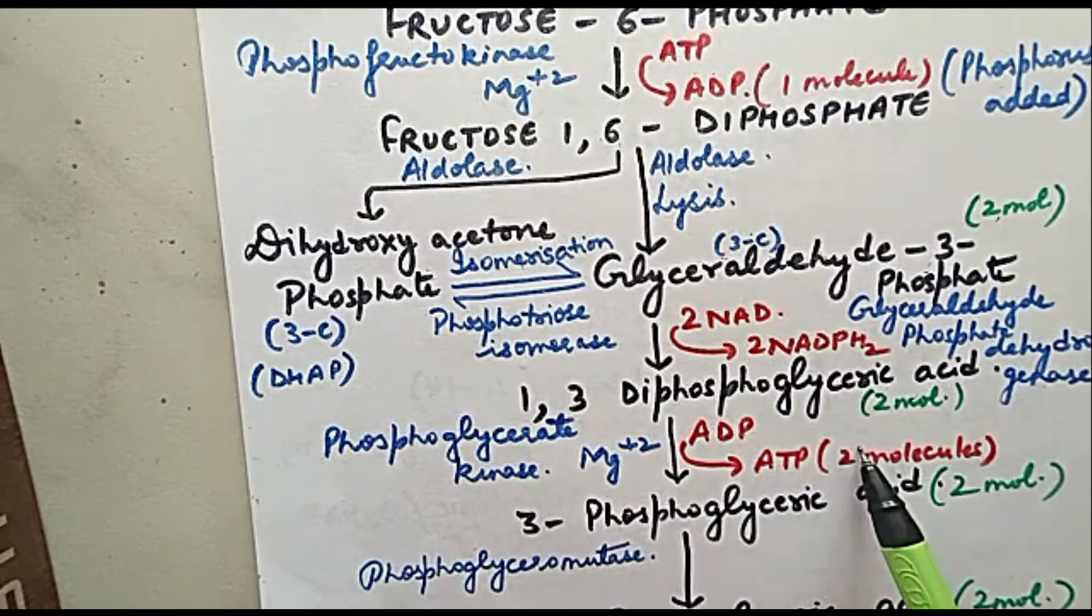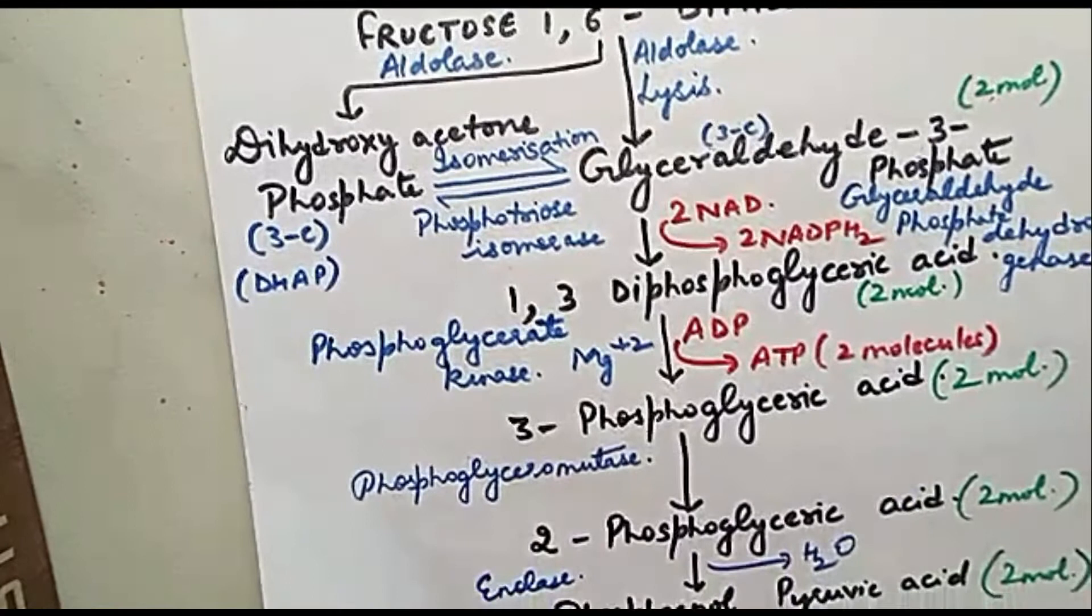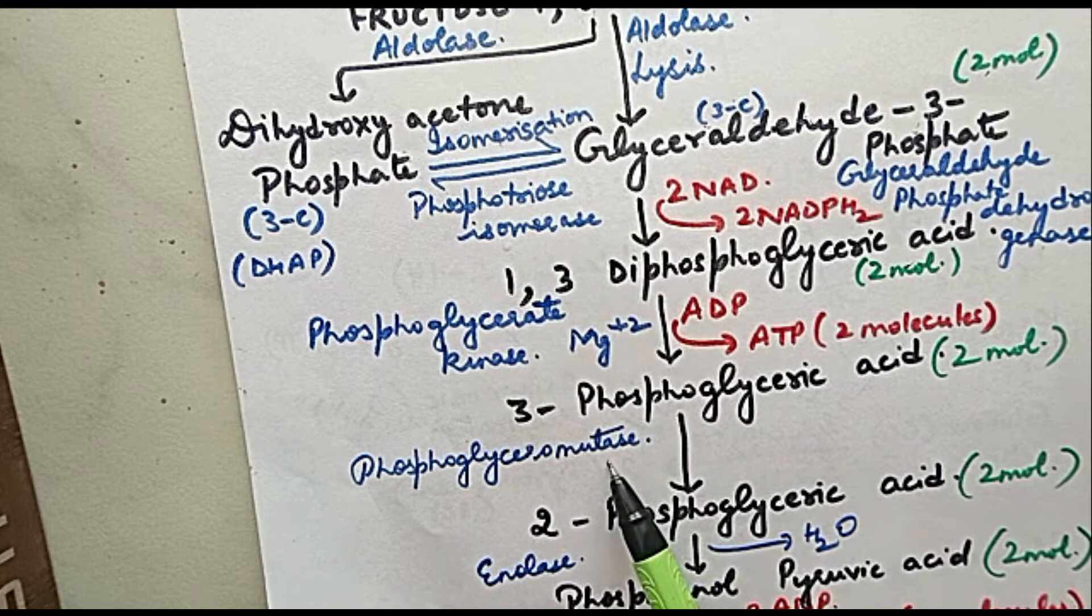That means 2 ADP will become 2 ATP. Then 3-phosphoglyceric acid will get converted into 2-phosphoglyceric acid, 2 molecules. Enzyme involved is phosphoglyceromutase.